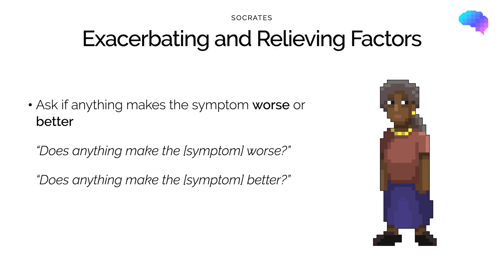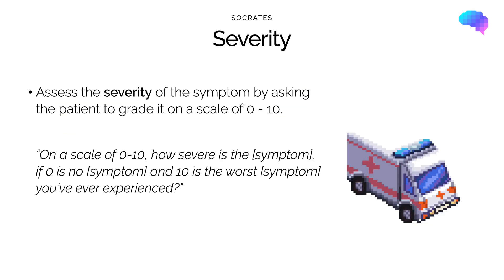Exacerbating and relieving factors involves asking the patient if anything makes the symptom worse or better. This may also involve asking if they've had any previous treatments for the symptom, including over-the-counter remedies or previous treatments from their doctor. Finally, the last part of SOCRATES involves establishing the Severity of the symptom, and you can do this by asking the patient to grade the symptom on a scale of 0 to 10.